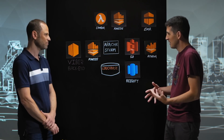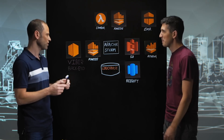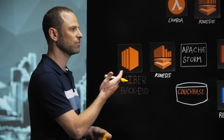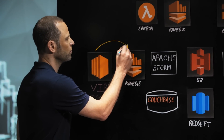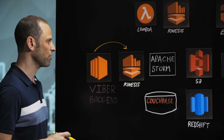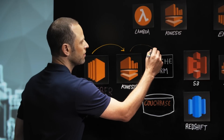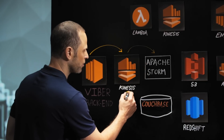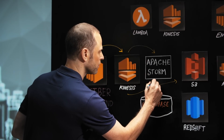Tell us about the life cycle of a message. We have our Viber backend with thousands of instances on EC2. They're sending events to Kinesis, which is streaming the events to our real-time data processing system and also streaming them directly to S3 via Kinesis Firehose.